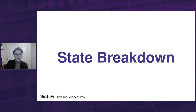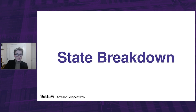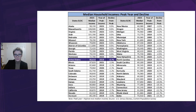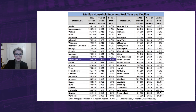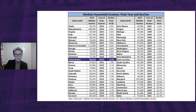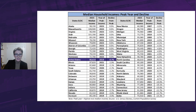Now let's shift our focus from median household income by age to median household income by state. For this section, our data only goes back to 1984. In this first chart, we've sorted the data based on the decline from each state's peak year. The median household income peaked in 2019, and in 2023, we were less than 1% off that peak, with the median household income for the U.S. at $80,610.